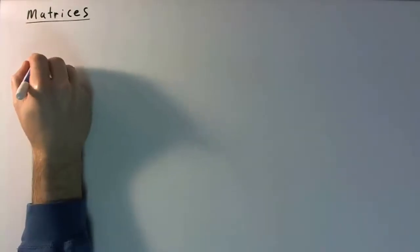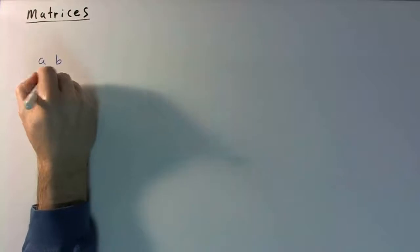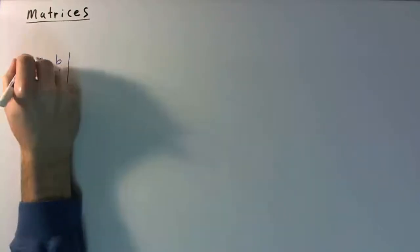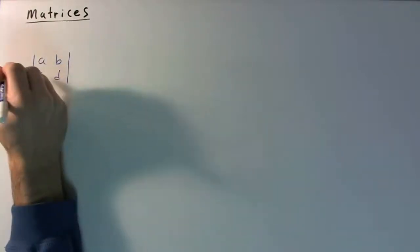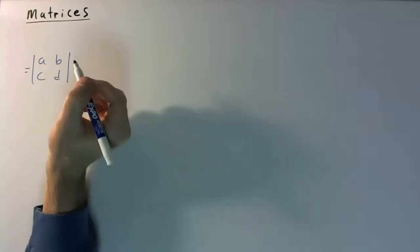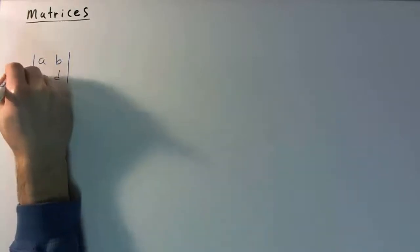So if we had a matrix A, B, C, D, and we'll label this matrix as A, right?